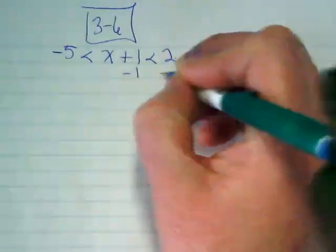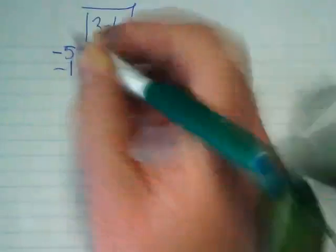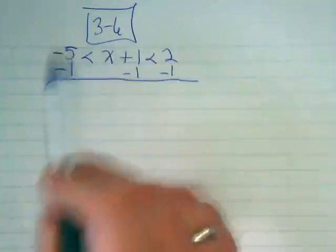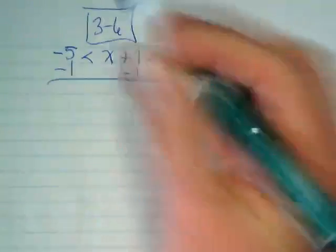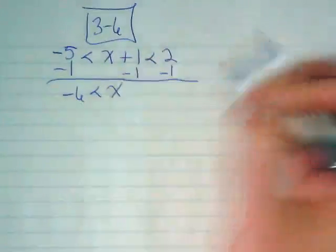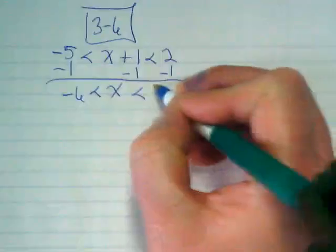So we have to take the plus 1 away from all of the parts of the inequality. Negative 5 and negative 1 is going to give us negative 6 is less than x, which is less than 1.